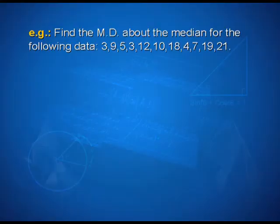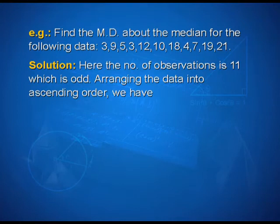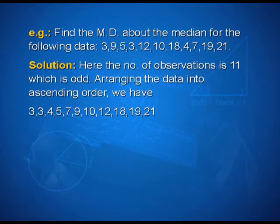Now let us look at one more example where we find the mean deviation about the median for the following data: 3, 9, 5, 3, 12, 10, 18, 4, 7, 19, 21. The number of observations is 11, which is odd. Arranging the data in ascending order we have: 3, 3, 4, 5, 7, 9, 10, 12, 18, 19, 21.